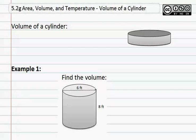5.2 G: Area, Volume, and Temperature - Volume of a Cylinder. The volume of a cylinder can be found by the formula pi r squared h. This means we need to know a couple things about our shape.